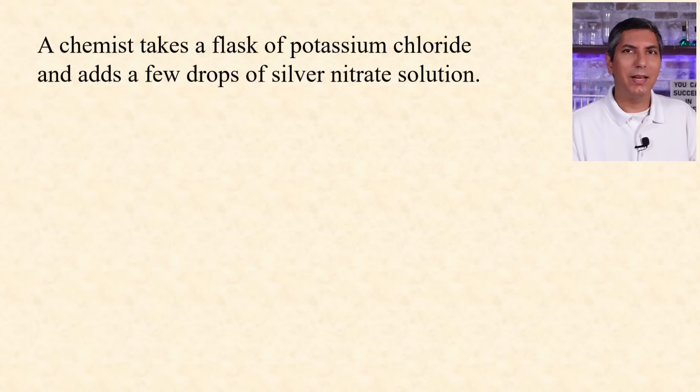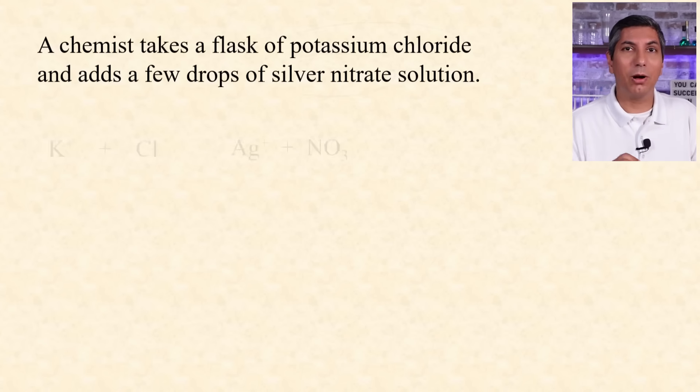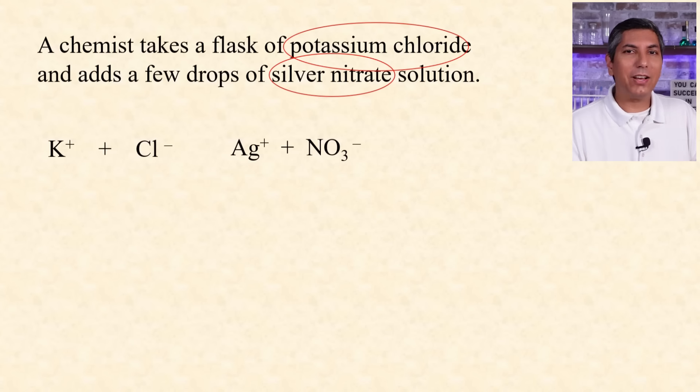When solutions react, some ions that are present may not be reacting, so it's useful to write a net ionic equation. Let's say we mix solutions of potassium chloride and silver nitrate. Remember, ionic compounds are completely ionized when dissolved in water, so we actually have a mixture of four ions swimming around.